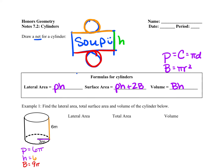For lateral area, our formula is perimeter of the base times the height. So our lateral area will be equal to 6π times 6, giving us 36π meters squared.